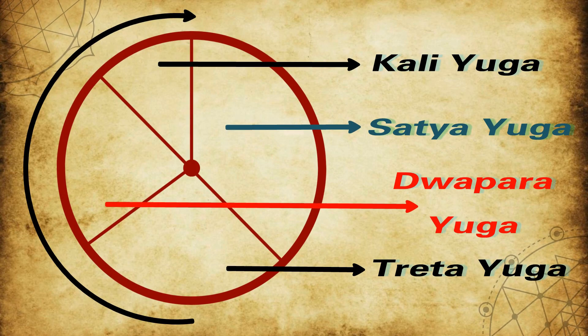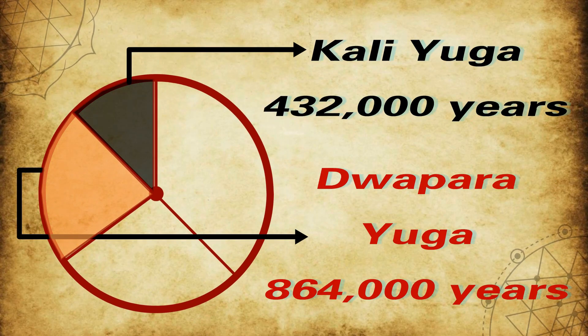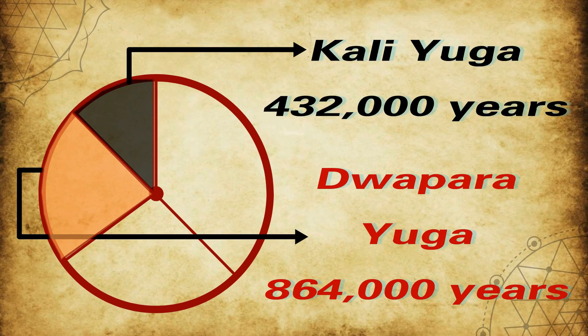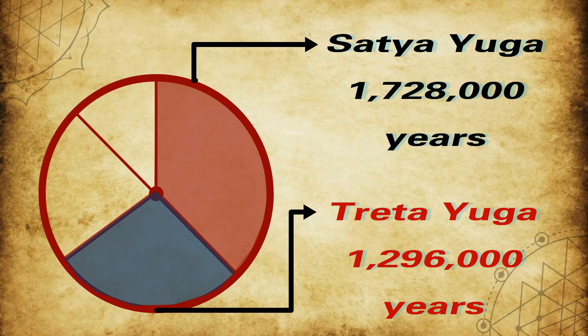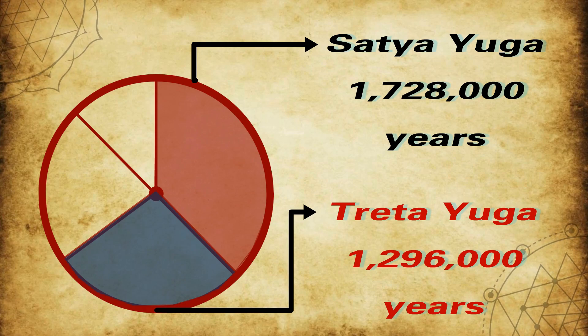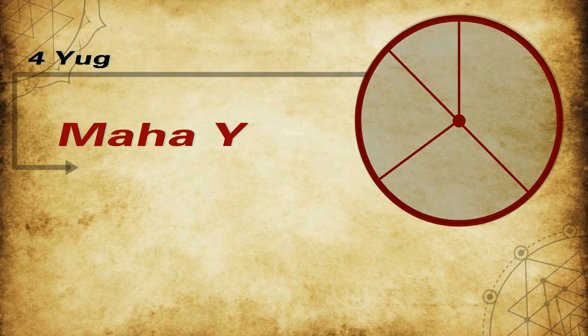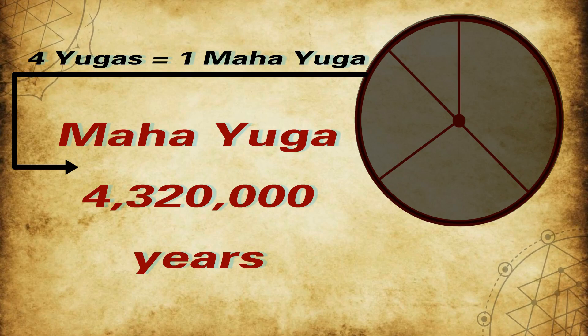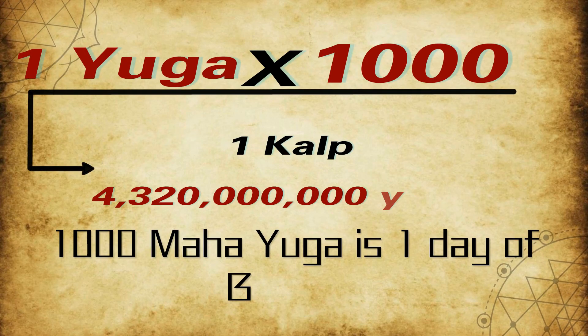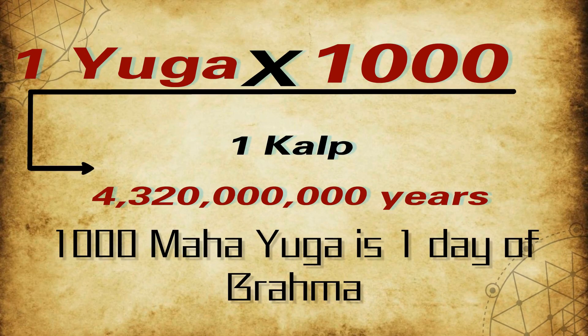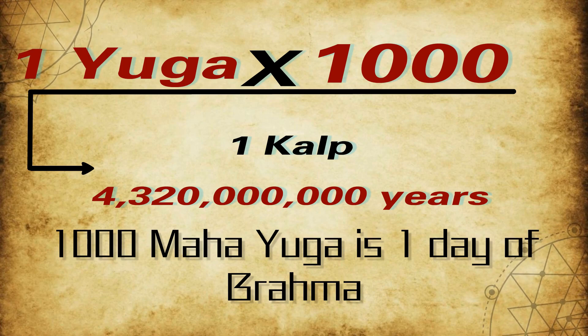I will start with Kali Yuga first. According to Vedic Shastra, Kali Yuga is 432,000 years. Dvabhara Yuga is 864,000 years. Treta Yuga is 1,296,000 years. Satya Yuga is 1,728,000 years. If you add four Yugas, you will get one Mahayuga. That is 4,320,000 years. Thousand Mahayuga is one day of Brahma. So Kalp is 4,320,000,000 years.